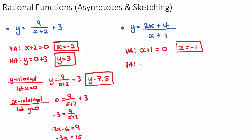For the horizontal asymptote, since there is an X on the numerator, the equation is Y equals the coefficient of X in the numerator divided by the coefficient of X in the denominator. That gives us 2 over 1, which is 2. There is no additional vertical shift in this example, so the horizontal asymptote is Y equals 2.